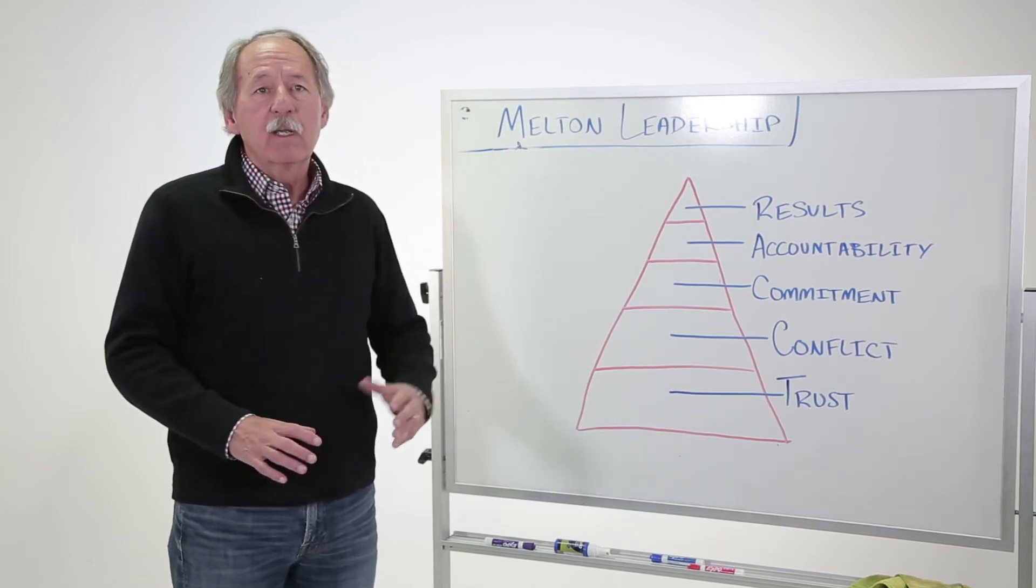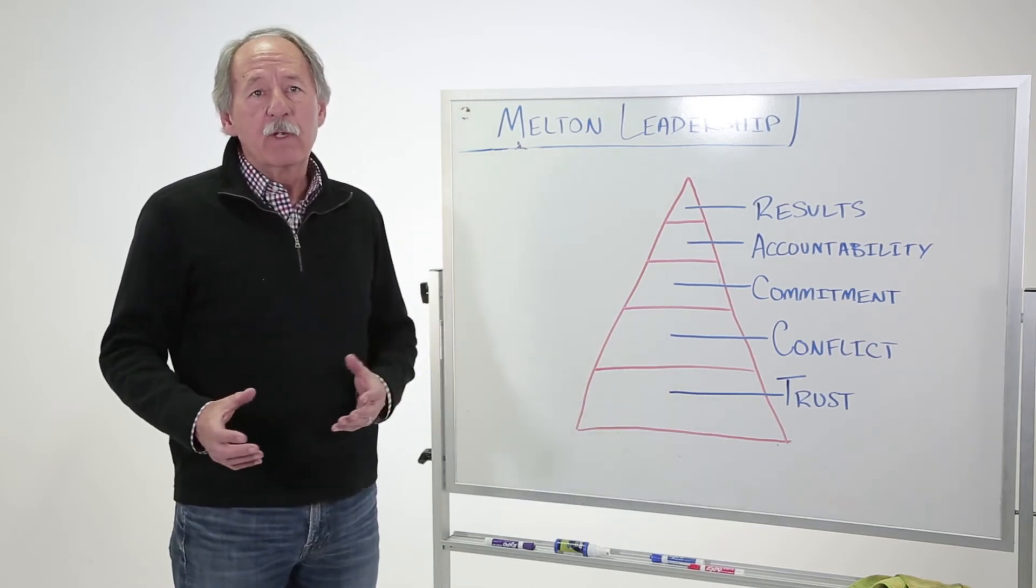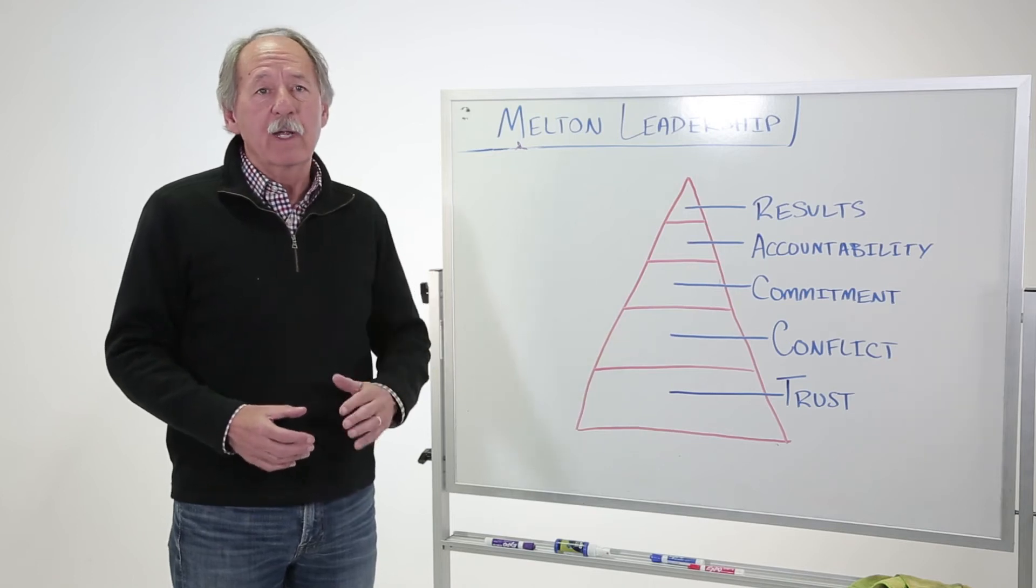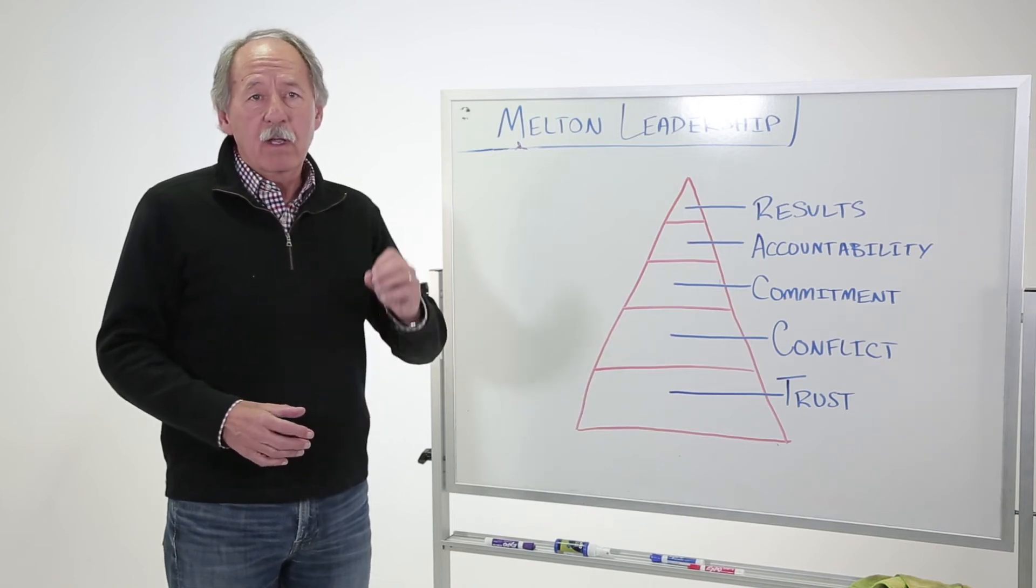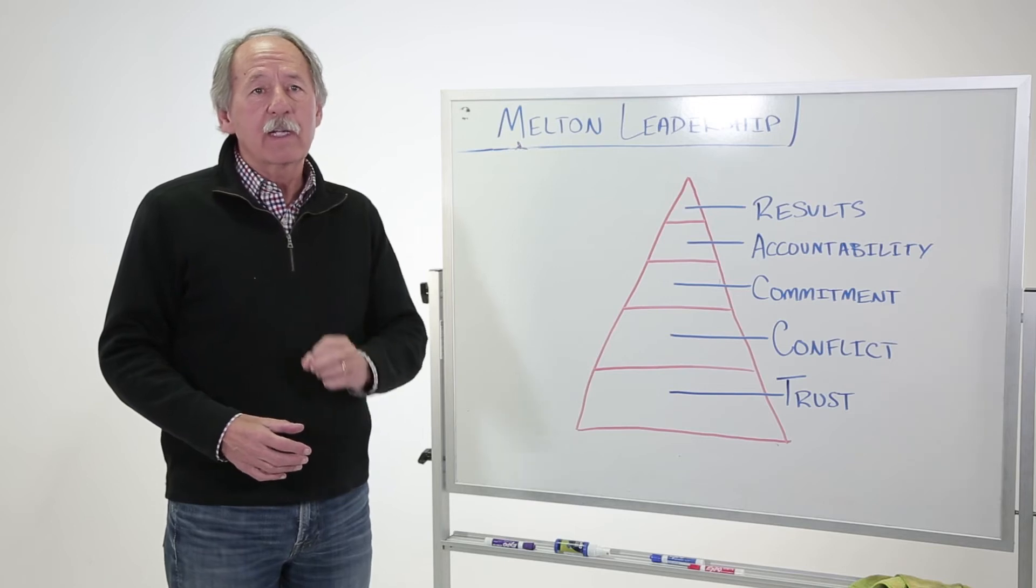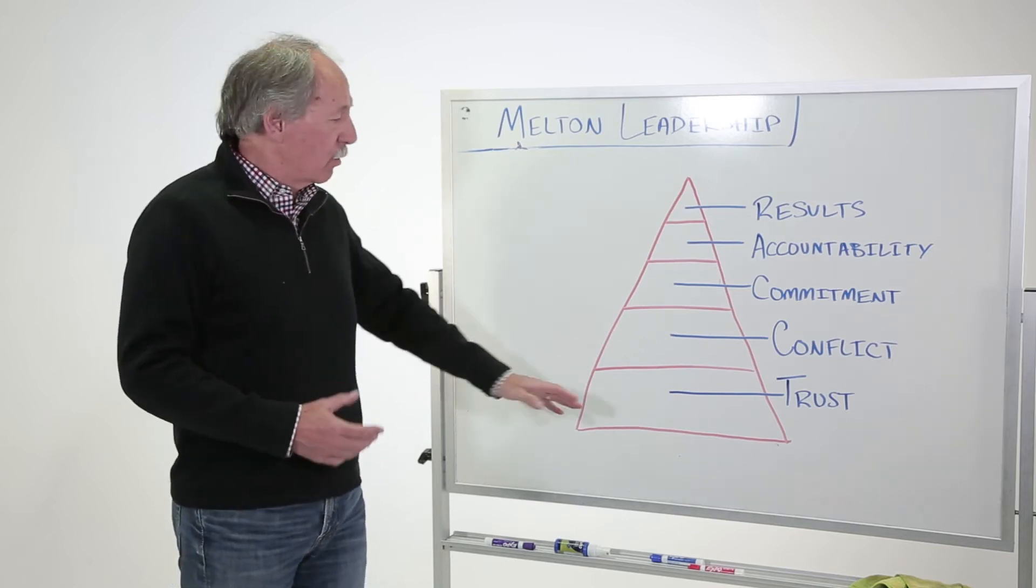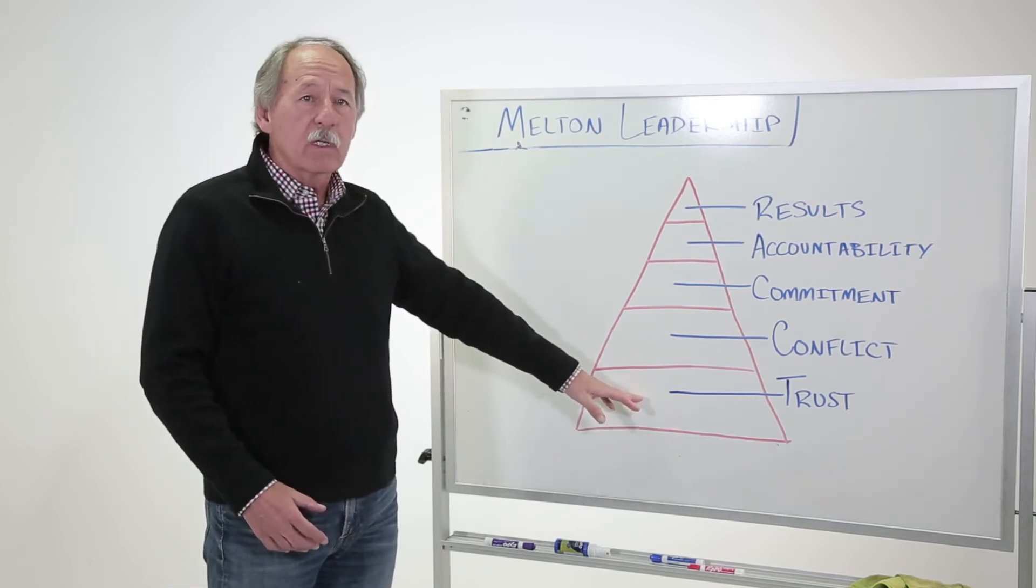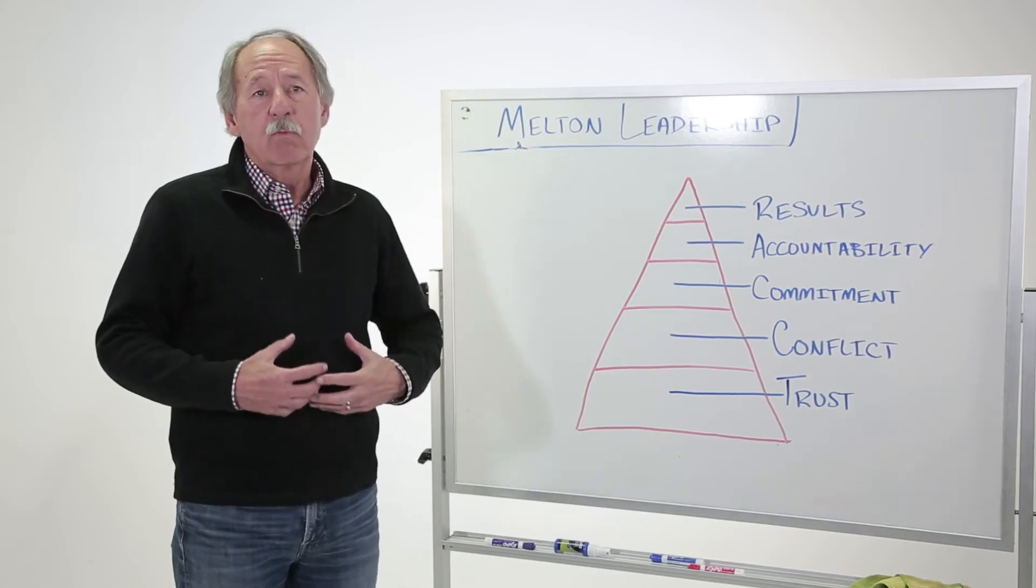If you don't have trust, as Stephen Covey says in his book, Speed of Trust, things operate at the speed of trust. The less trust, the longer it takes, the more it costs. Same with an organization. And Lencioni talks about vulnerability. So what does that look like?